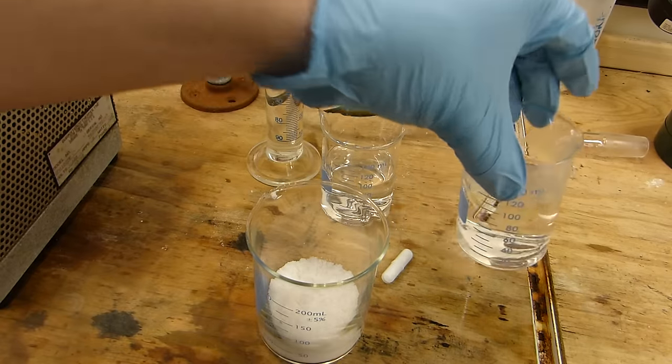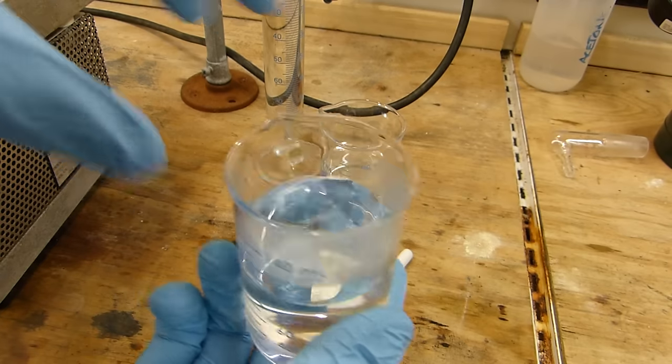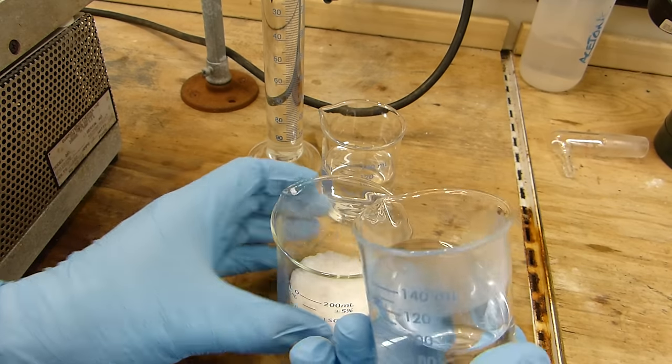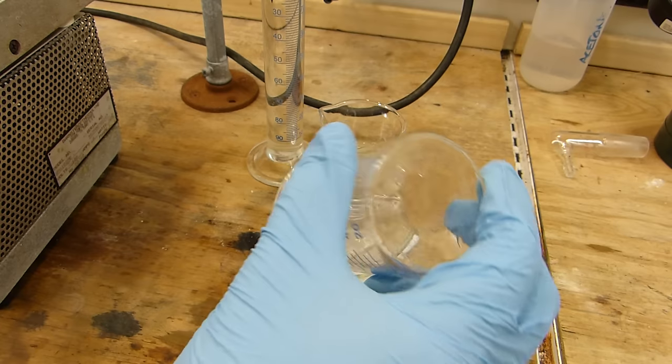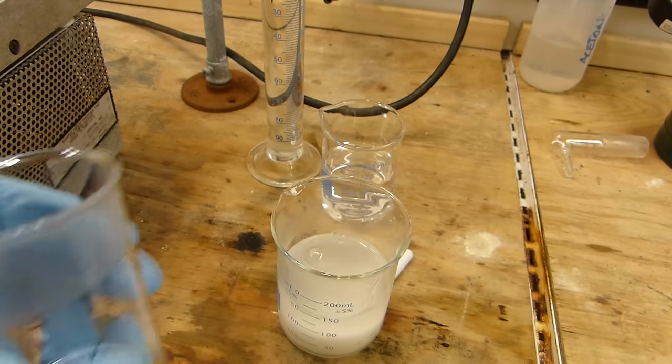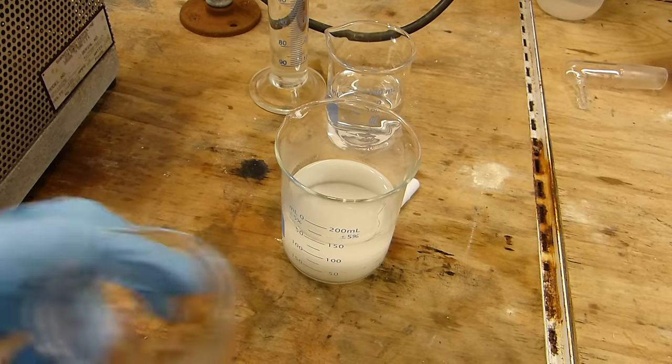Now the first thing I'm going to do is add this hot water to the oxalic acid dihydrate and start getting it in solution. So we'll just do that really fast and it'll take a little while to dissolve. I'll stir it periodically.